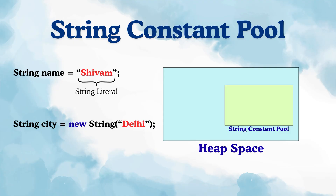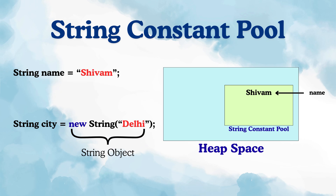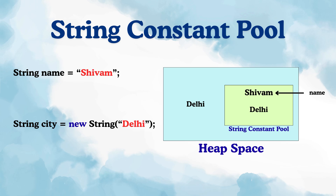The first one is called a string literal, and it will be stored in the pool. The reference variable name will be pointing towards it — basically this reference variable will have the address of the location where 'shivam' is present. The second one is called a string object. In this case, it will be stored in heap memory as well as the pool. When we use the new keyword, Java considers it as an object and objects are saved in heap memory. But since it's also a string, JVM will also save it in the pool. The city reference variable will be pointing towards the one in the heap memory, not the one in the pool.